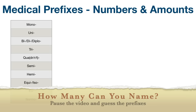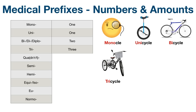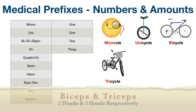Starting with mono — this means one or single. You can think of a monocle, which is a single eyeglass, to remember mono refers to one. Uni also refers to one — think of a unicycle, which has a single wheel. The prefix bi, di, or diplo means two or double, and tri refers to three or triple. Think of a bicycle (two wheels) and a tricycle (three wheels), or in medical terminology, your biceps (two heads or parts) and triceps (three heads or parts).